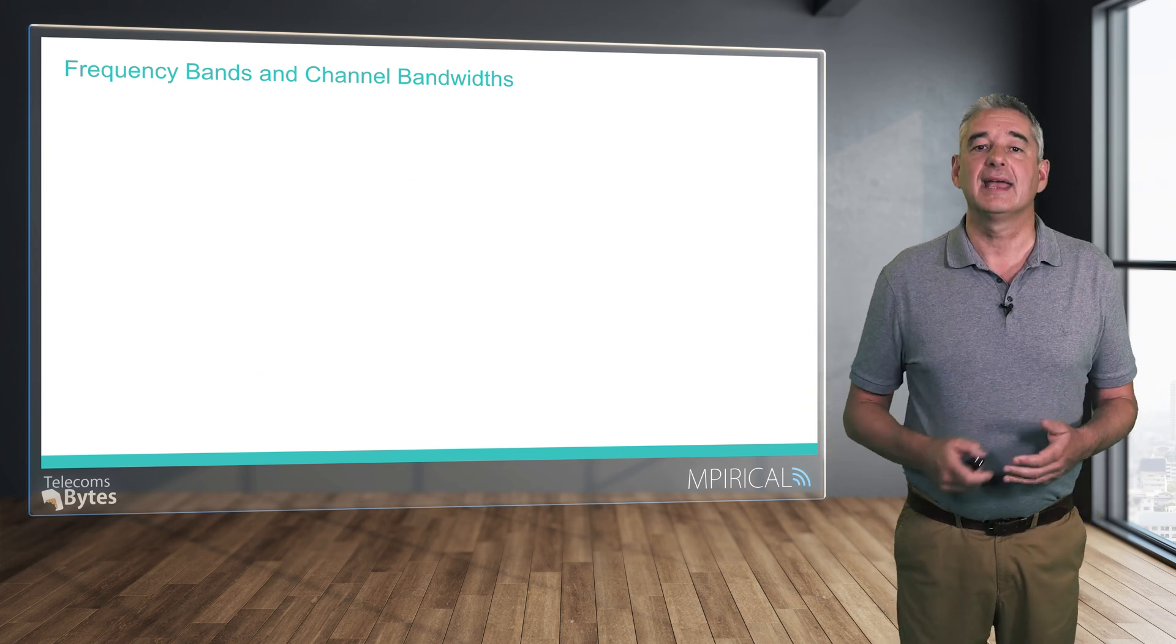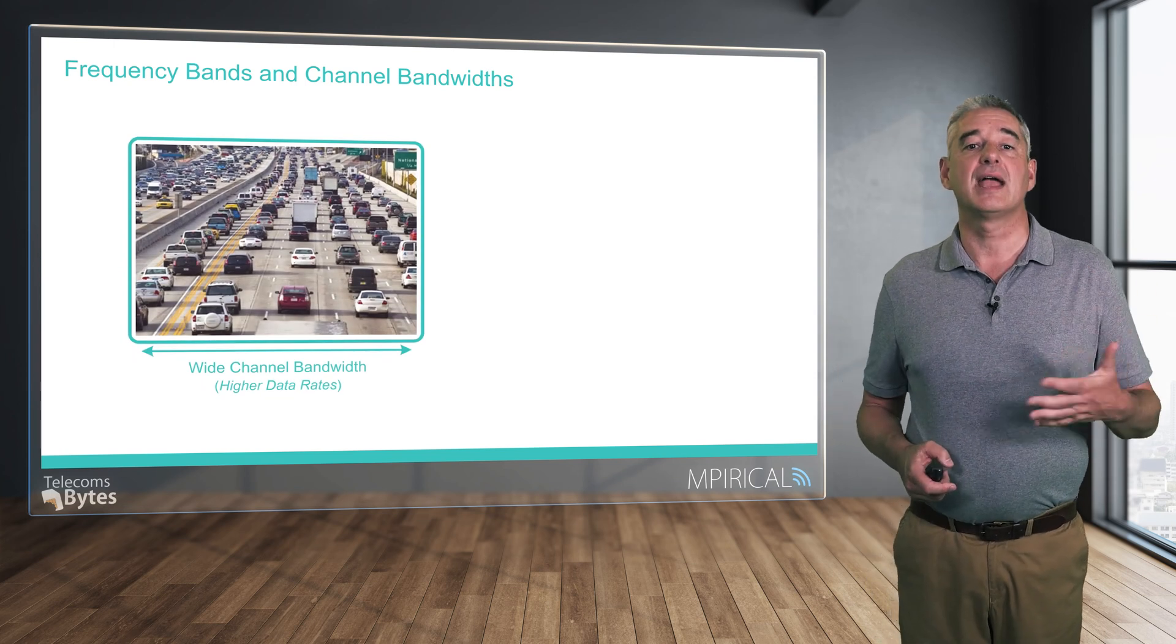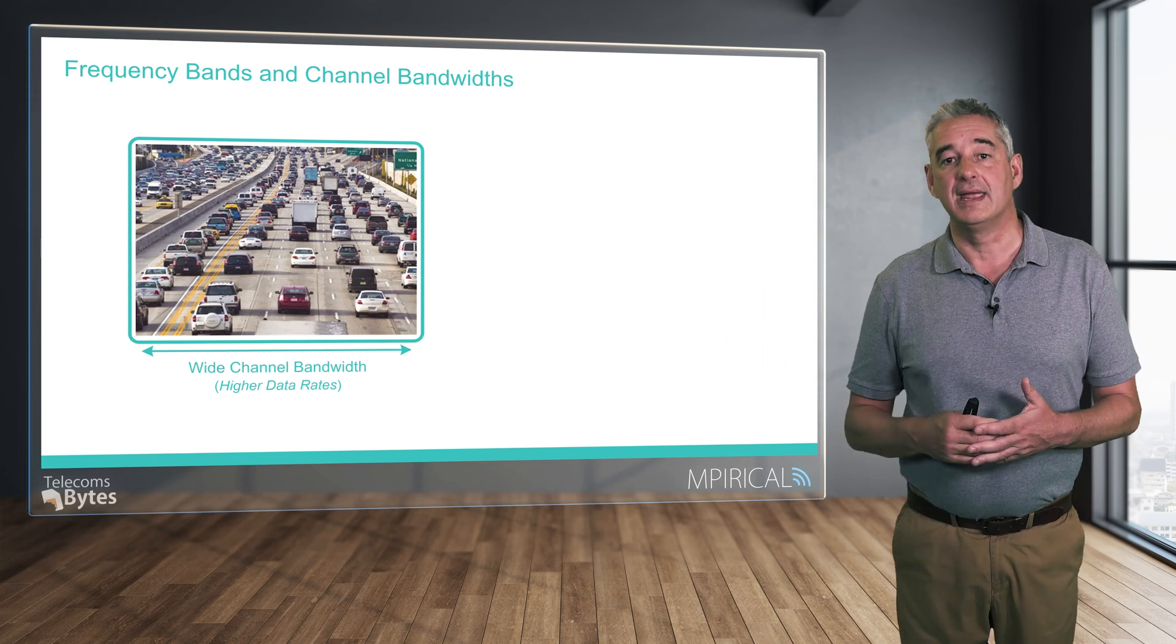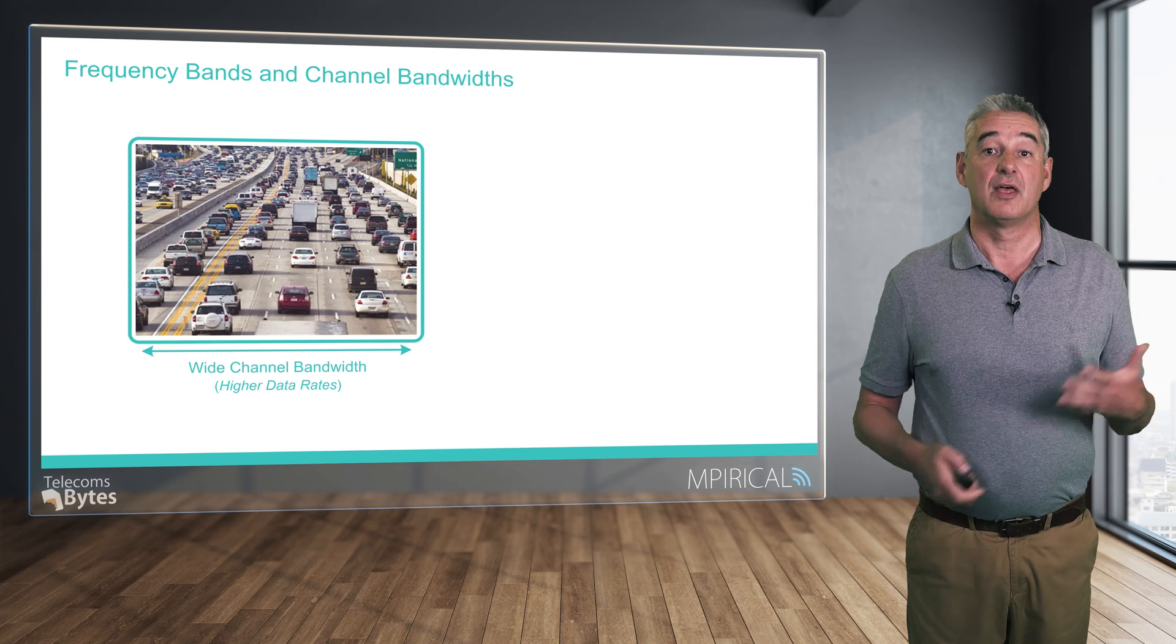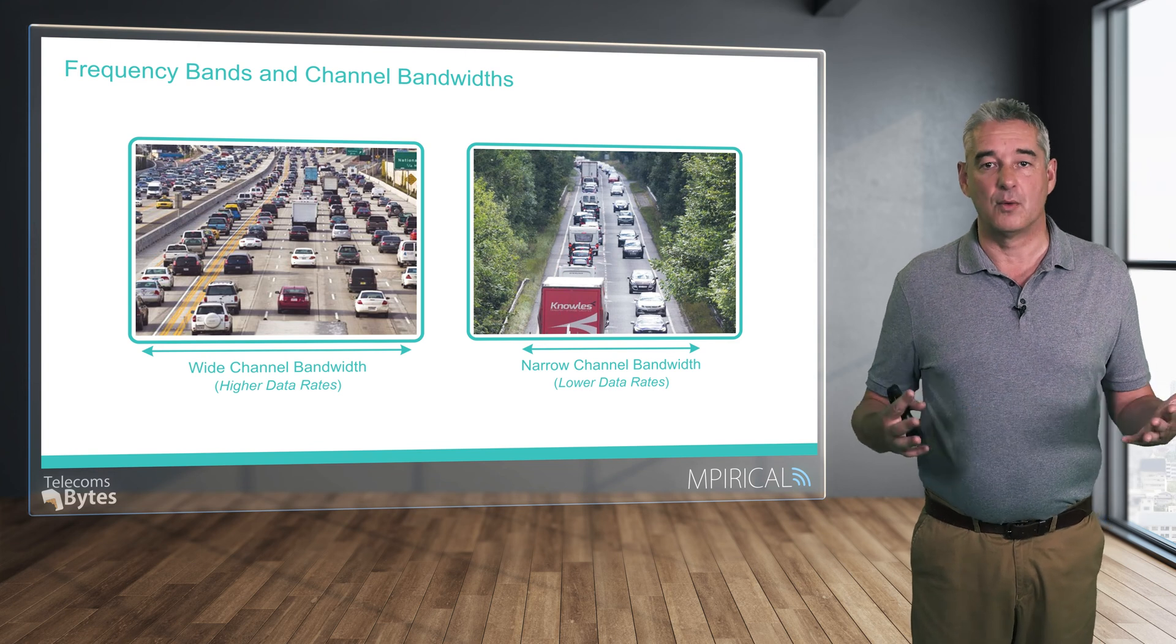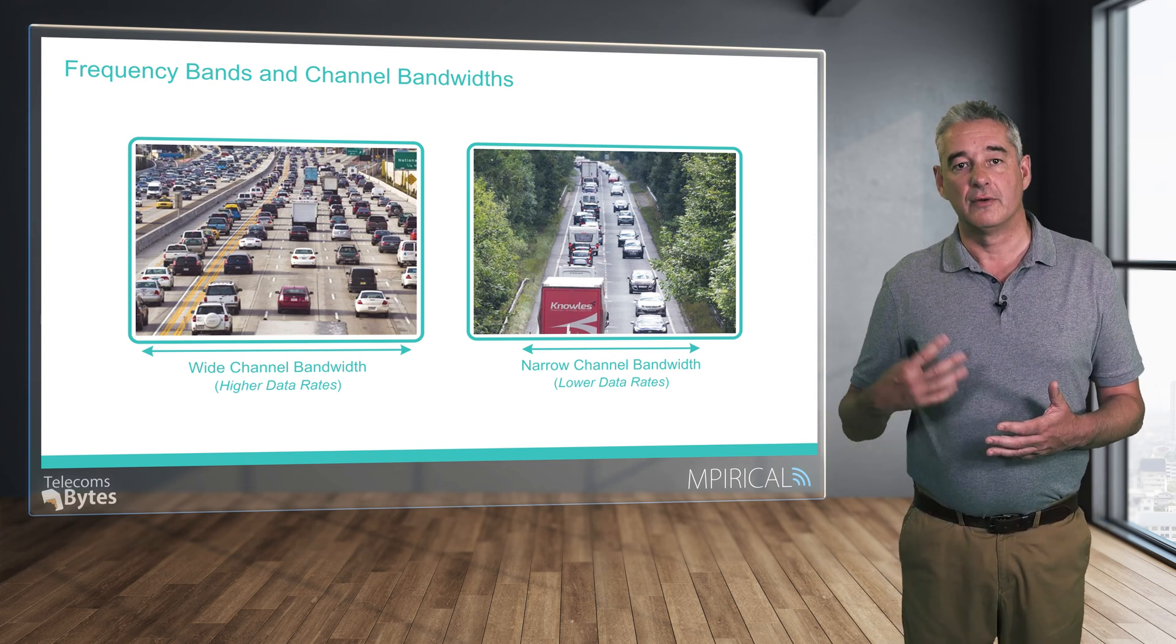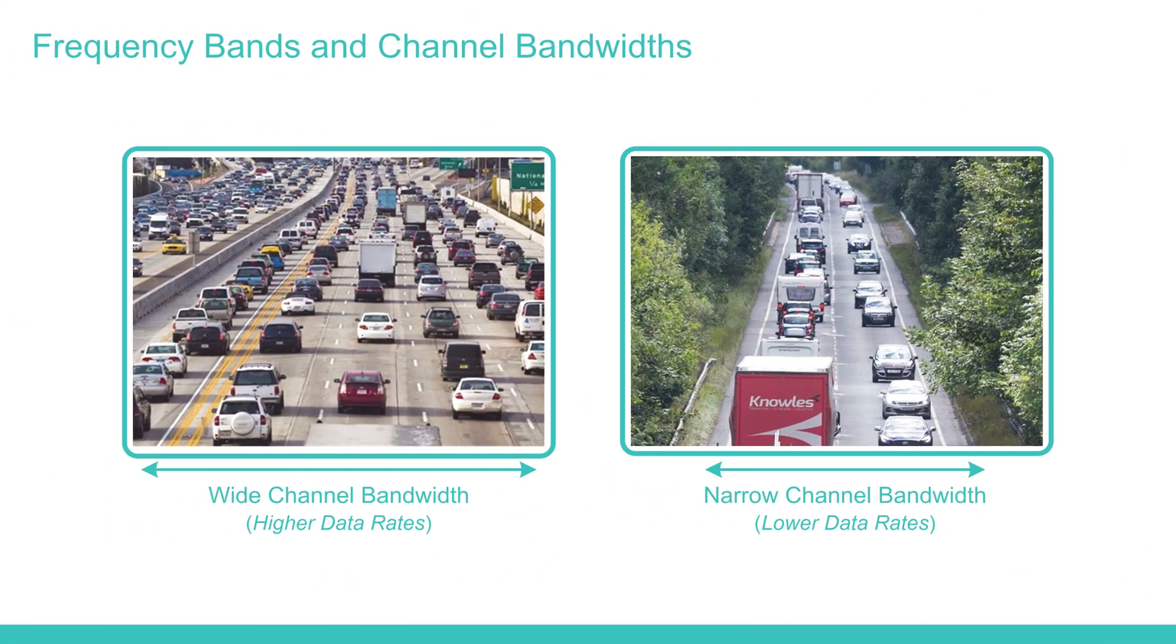However, allocating wider channels within a frequency band means higher data rates can be supported, in much the same way that a multi-lane highway can service more vehicles than a single lane road. For example, the 5 gigahertz band used by Wi-Fi can be divided into 20, 40, 80, or 160 megahertz wide channels.